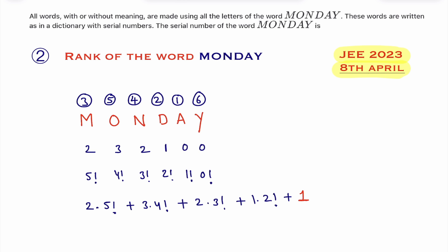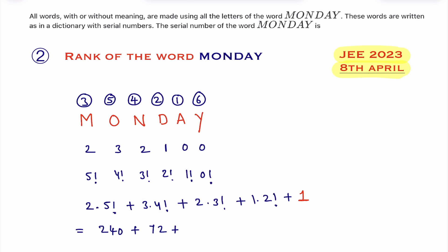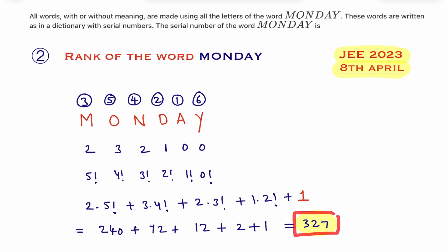Now simplify: 5! = 120, so 2×120 = 240. Then 4! = 24, so 3×24 = 72. Then 3! = 6, so 2×6 = 12. Then 1×2! = 2. Adding all these: 240 + 72 + 12 + 2 + 1 = 327. Therefore, the rank of the word MONDAY is 327.